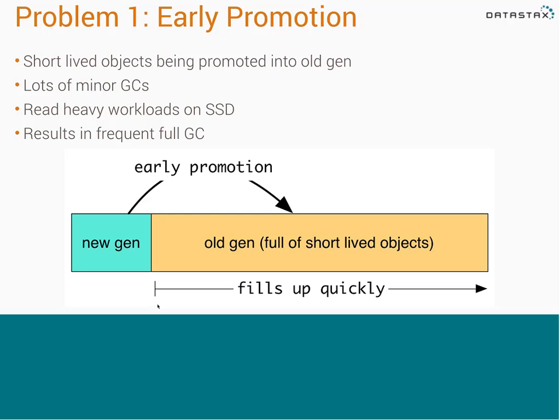There are two GC problems you can hit. The first is early promotion: if you've got a bunch of really short-lived objects and your new gen size is too small, your new gen fills up and gets promoted to your old gen. Short-lived objects — things that last maybe 100 milliseconds — end up in the old gen, filling it with objects that don't belong there, resulting in lots of full GCs. This is a big problem particularly with read-heavy workloads on SSD, resulting in a lot of minor GCs and full GCs, so your performance is pretty bad.